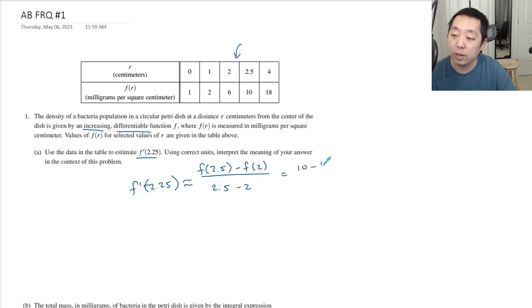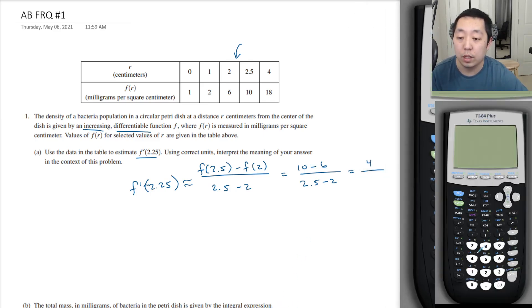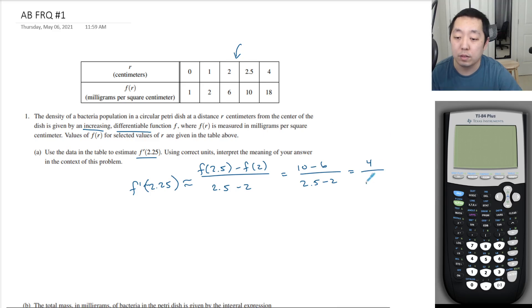And so this is going to be 10 minus 6 over 2.5 minus 2, and that's equal to 4 over, oh man, this is a calculator portion. I don't know what I'm thinking. Calculator portion. So we're going to do, oh I guess I could do this with my hand. 4 divided by 0.5 is 8.